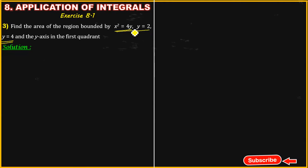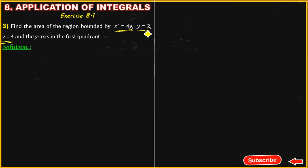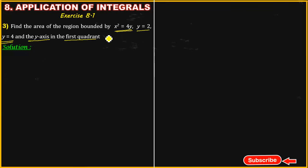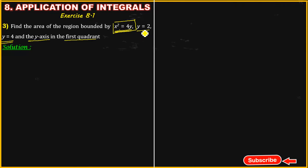Find the area of the region bounded by x squared is equal to 4y, y is equal to 2, y is equal to 4, and the y-axis in the first quadrant.